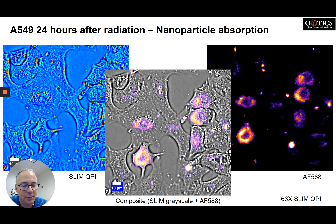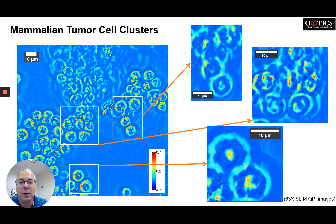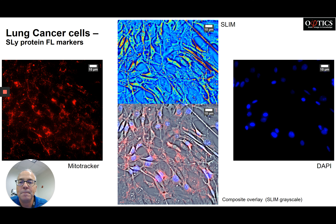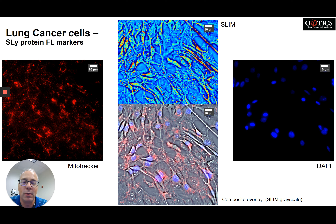Here are some mammalian tumor cell clusters — you can see and monitor what's going on with them. These are lung cancer cells with mitotracker on the left, DAPI on the right, SLIM on top, and then the composite overlay with SLIM as the grayscale layer below.